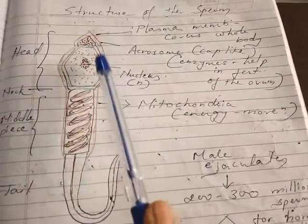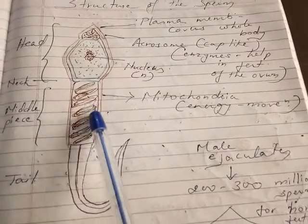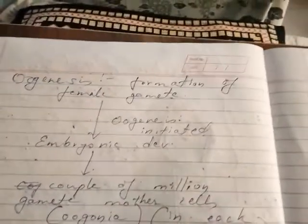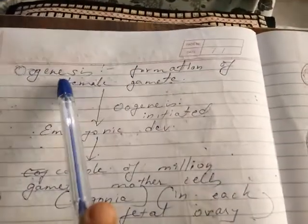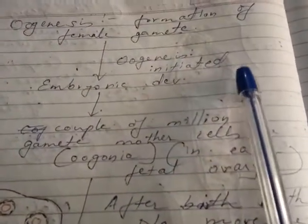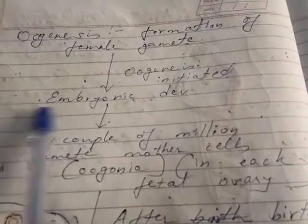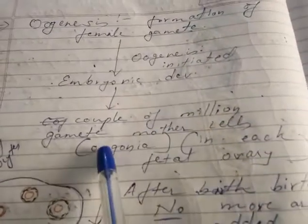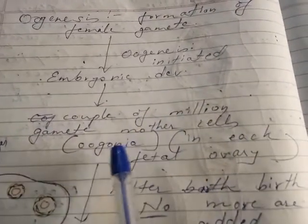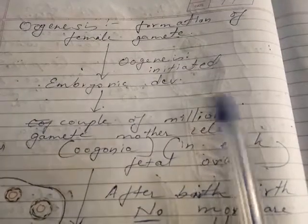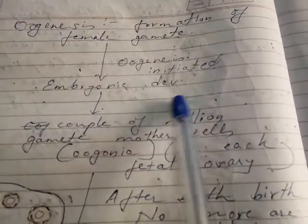The sperm has head, neck, middle piece, and tail — that is about the male reproductive system. Now in case of female, oogenesis takes place for the formation of the female gamete. Oogenesis is initiated during embryonic development; a couple of million gamete mother cells called oogonia are formed in each fetal ovary.